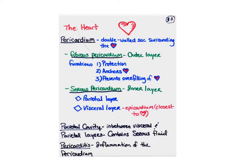The heart is surrounded by what we call the pericardium, a double-walled sac that surrounds the heart. The outer part is called the fibrous pericardium — that's fibrous connective tissue, it's very tough and not really expandable. But there is a considerable amount of fluid within the pericardium that allows the heart to expand.